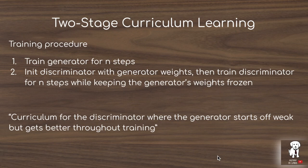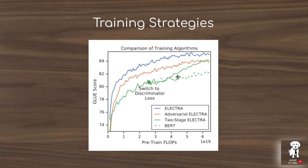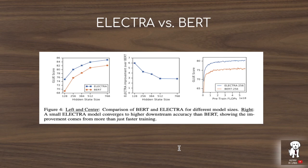They find that this curriculum — where the generator starts off weak and improves throughout training — is an interesting strategy, but it doesn't outperform training both models simultaneously. The performance plots show ELECTRA achieves higher gains over BERT particularly with smaller hidden state sizes or when training with less compute, benefiting more from smaller model sizes and compute efficiency than BERT does.